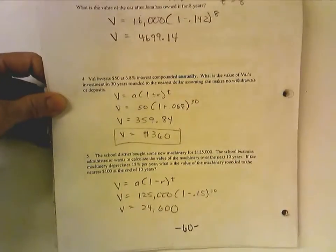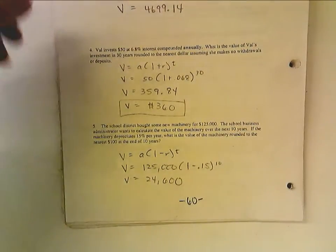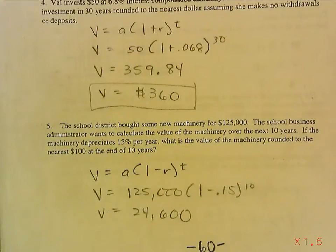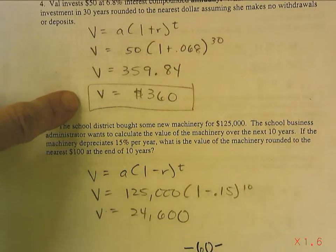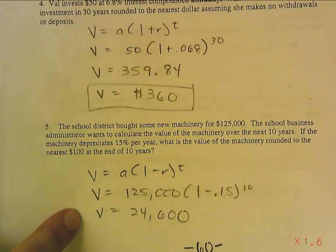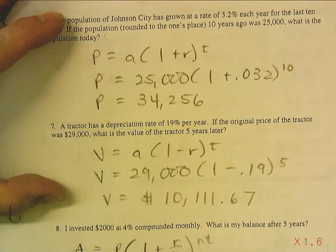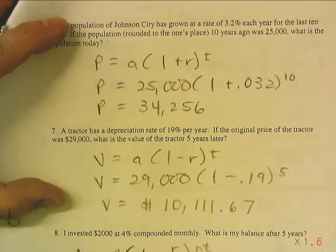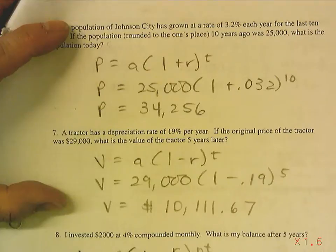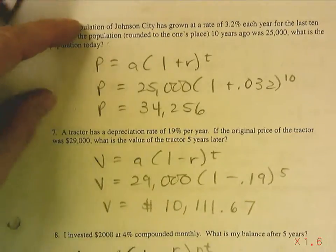Okay. So, now, I'm going to show you the answers for 4 and 5. Let me zoom in. So, 4 is $360. 5 is $24,600. For number 6, $34,256. And number 7, $10,111.67. Okay. The next video, we'll go over compound interest.